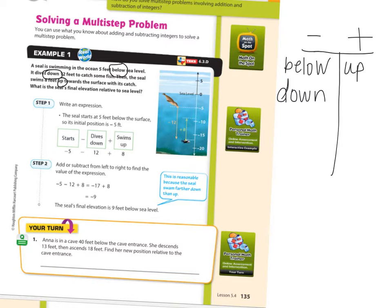Number one down here, Anna is in a cave 40 feet below. We already got that. And then she descends 13 feet. Is that negative or positive? Descends means going down. And then she ascends 18 feet. That means going up. Ascends.